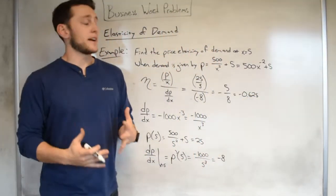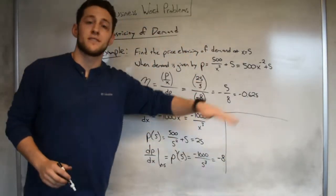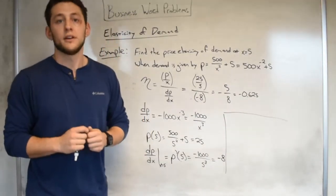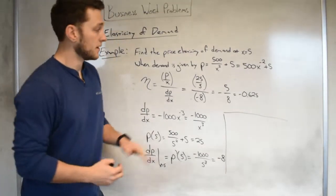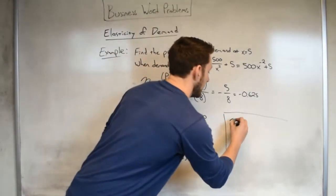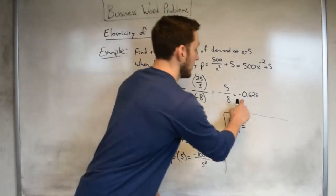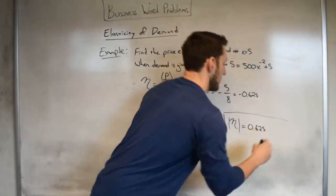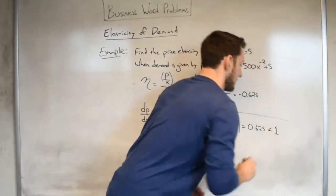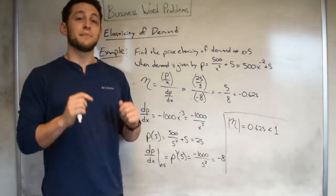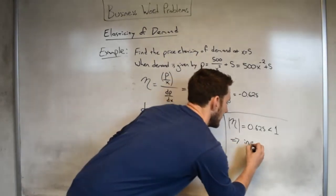Last of all, we just have to evaluate our answer. So this is the price elasticity of demand, but we could go a step further if I required it. For instance, is the market elastic, unit elastic, or inelastic? Well, we know that eta, the absolute value of it, is equal to just positive 0.625. But that is less than 1. Since I'm less than 1, meaning I'm in between negative 1 and positive 1, that means that my market is inelastic.